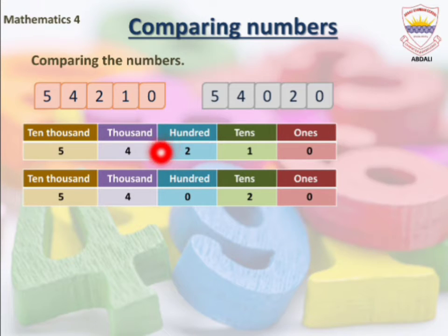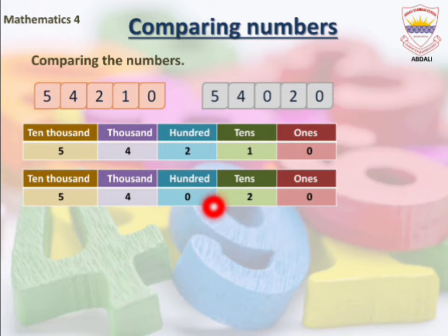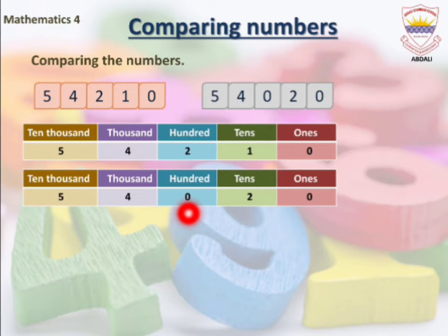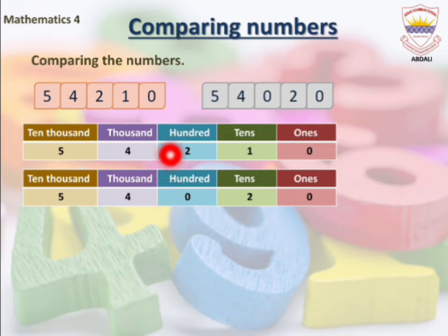Now let's compare our hundreds. In the first place value chart, two is under hundreds. In the second place value chart, zero is under hundreds. Students, tell me — which number is greater? Two is greater and zero is smaller. In the hundreds place, both the digits are different.